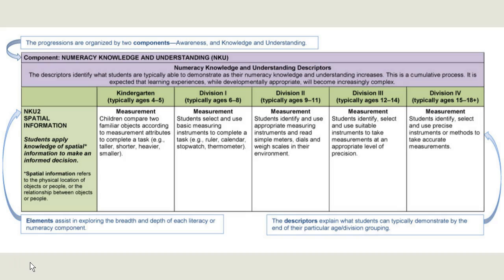When you view the progressions horizontally, this provides an overview of how numeracy is developed throughout a student's schooling K-12. When you view them vertically, you'll be able to see the descriptors in each element and how they provide a profile of how numeracy is developed within subjects throughout that age range or division.